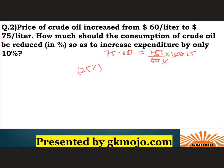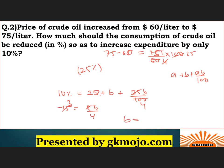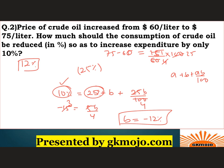Now they are saying that the expenditure can only be increased by 10 percent. So write this 10 percent and apply the formula of a plus b plus ab upon 100. The a is 25 and this b we do not know, just write it as it is. So this will be 25b upon 100. Solving this gives minus 15 equals 5b by 4, so b equals minus 12 percent. We have to decrease the consumption by 12 percent. The 10 percent is expenditure increase, 25 percent was the price increase, and 12 percent is by which we reduce consumption. The answer is 12 percent.